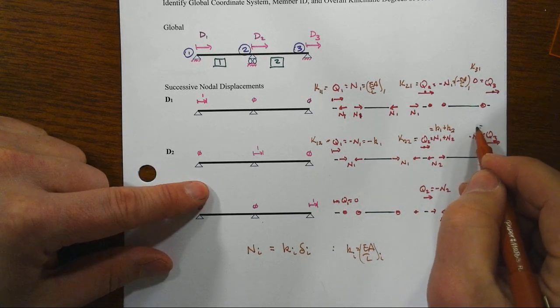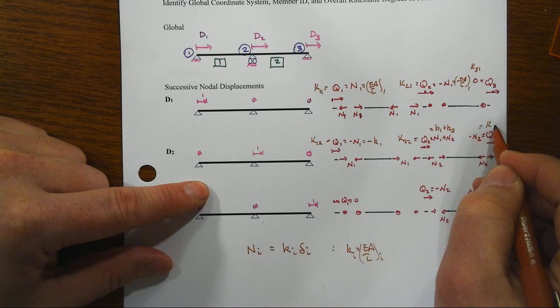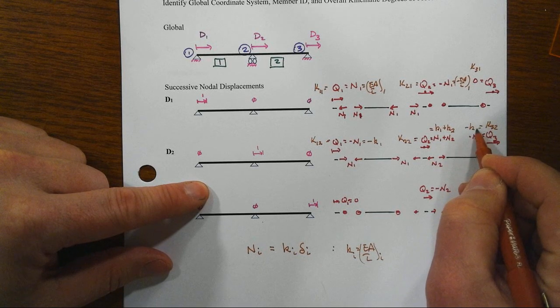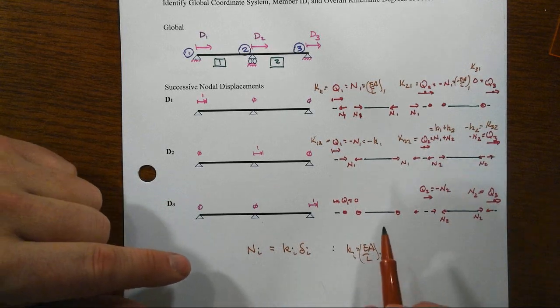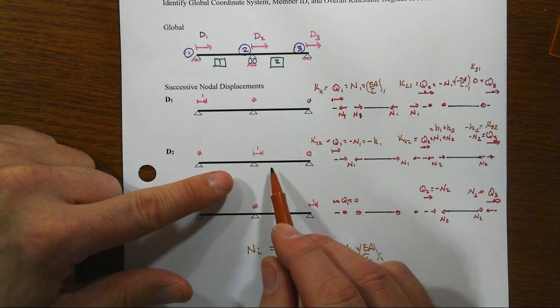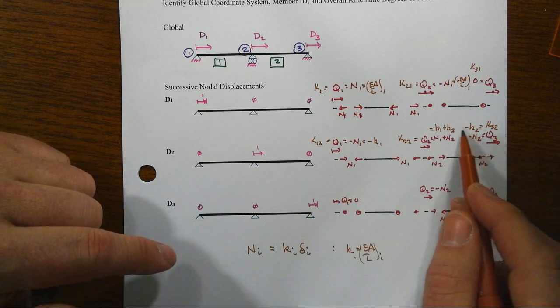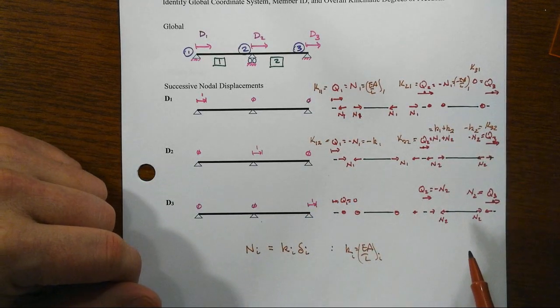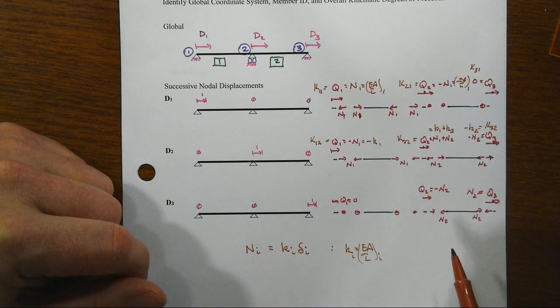And then this last one is K32 is equal to this minus little K2. Now in our specific case, these two members were identical, both of length and E and A, so K1 equaled K2, and that was 966.6 repeating kips per inch.